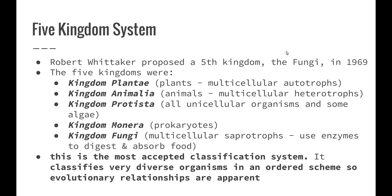This brings us to the five-kingdom system. Robert Whittaker proposed a fifth kingdom — the Fungi — in 1969. The five kingdoms were: kingdom Plantae (multicellular autotrophs), kingdom Animalia (multicellular heterotrophs), kingdom Protista (all unicellular organisms and some algae), kingdom Monera (prokaryotes without a true nucleus or membrane-bound organelles), and kingdom Fungi (multicellular saprotrophs, which use enzymes to digest and absorb food).